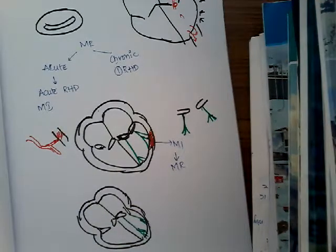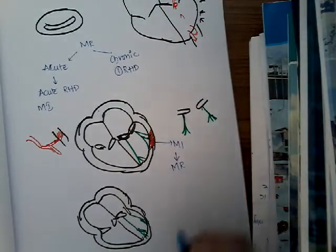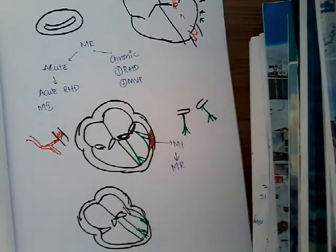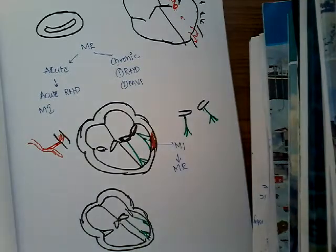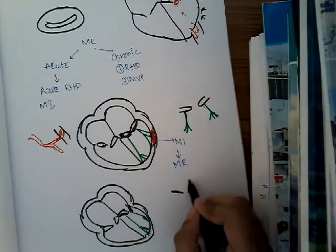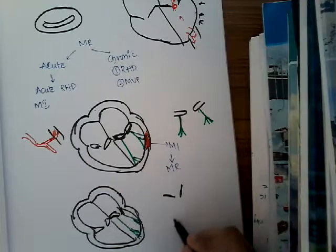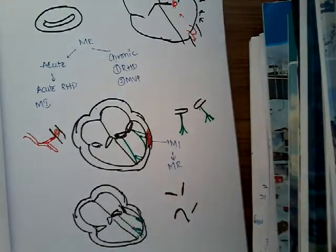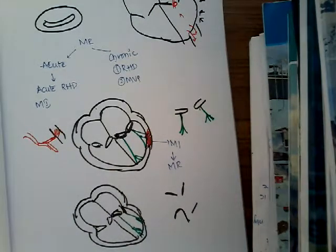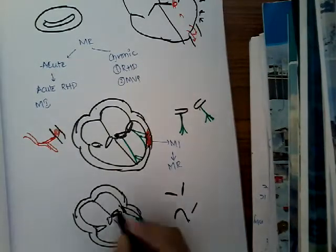Another chronic cause is mitral valve prolapse, which we will also learn about in the next few classes. In mitral valve prolapse, instead of closing normally, the mitral valve prolapses into the left atrium. Because the valve is prolapsed into the left atrium, it cannot close properly, resulting in mitral regurgitation.